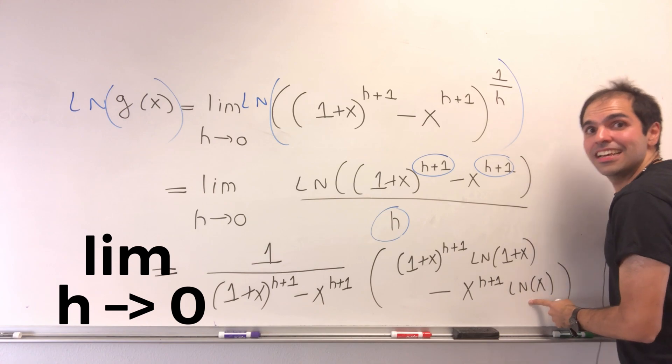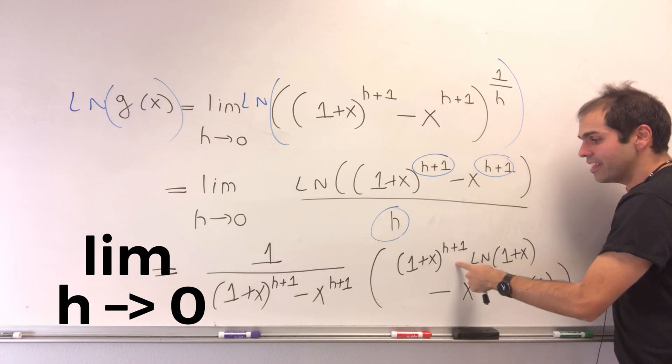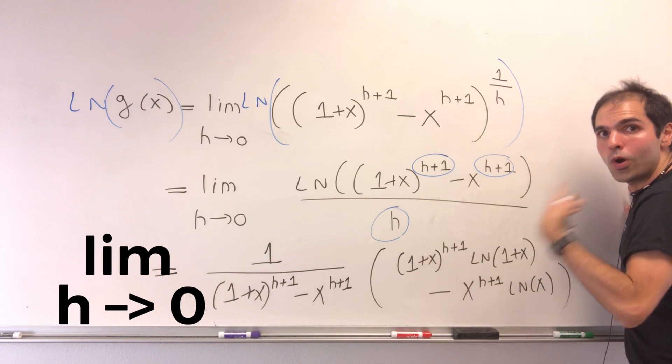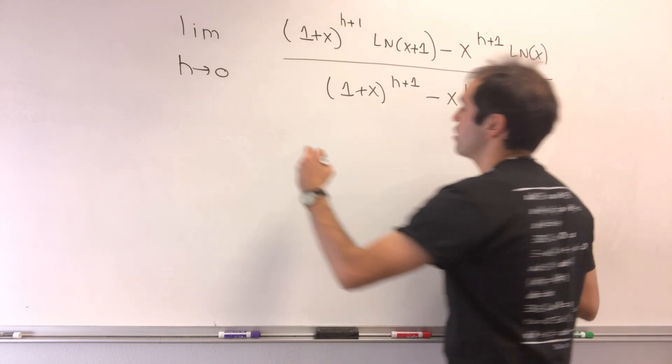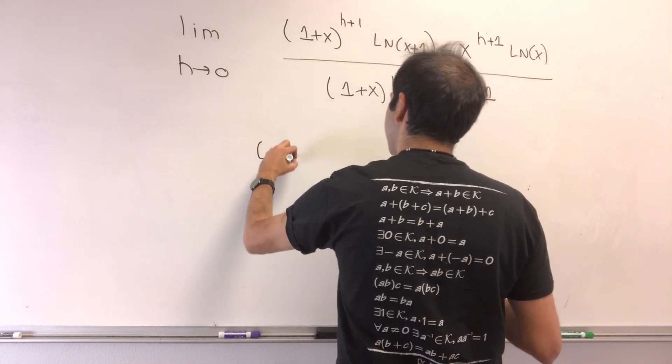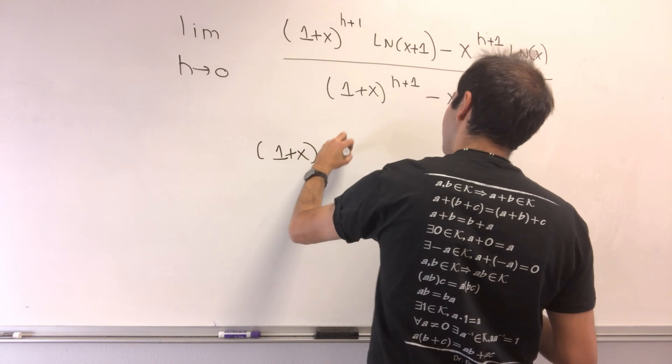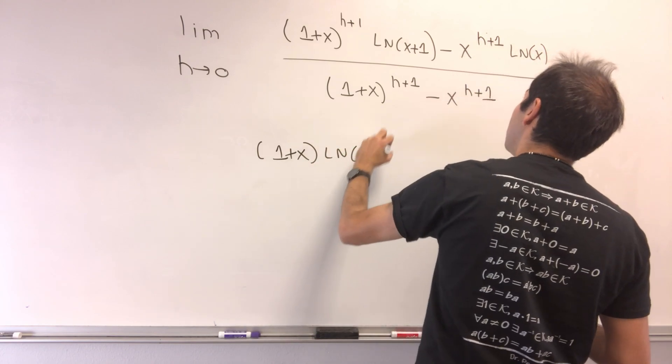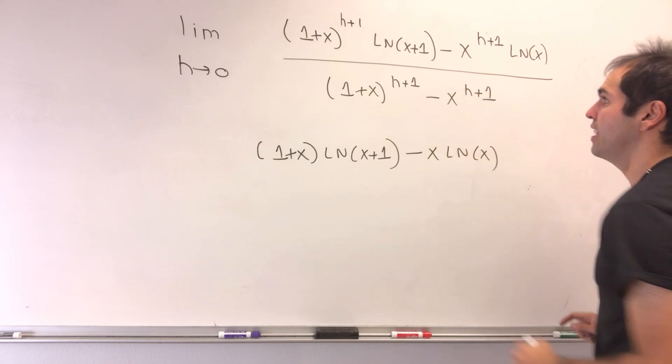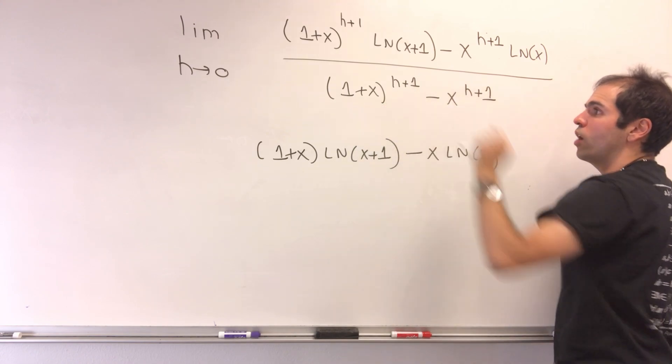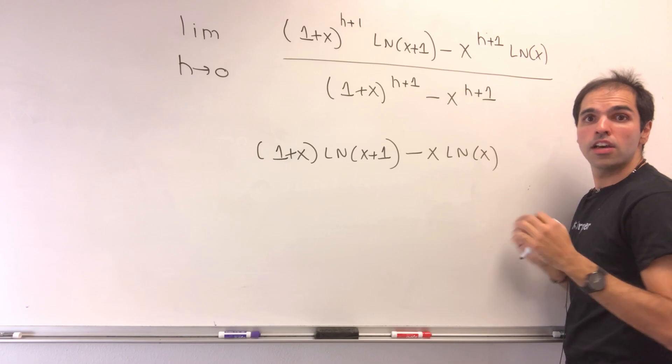The cool thing is, now this thing, it's not indeterminate anymore. We can just let h go to zero, and then let's see what happens. As h goes to zero, this becomes 1 plus x ln of x plus 1 minus x ln of x, and the denominator just becomes 1 plus x minus x, which is just 1.